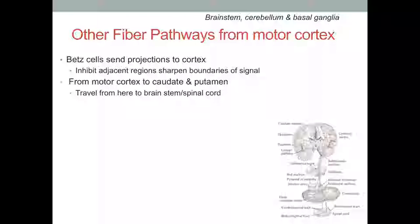There are motor pathways that go to the caudate and the putamen. The caudate and the putamen are two areas of the center of the brain. There are some areas that are associated in habit formation and habitual learning, and they travel there from the motor cortex to the caudate, and they go to the brainstem and the spinal cord. These are striatal areas, involved in habit formation and new memory formation.